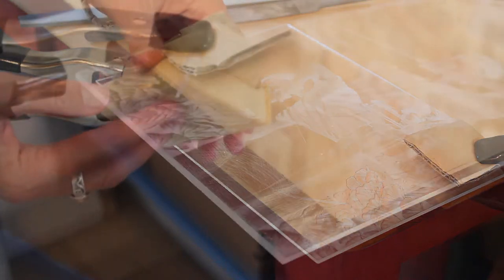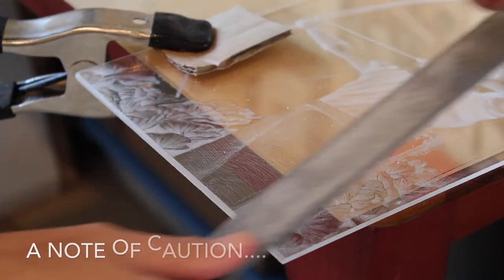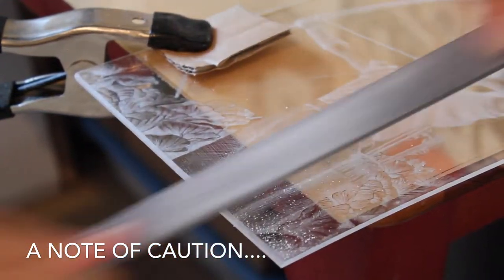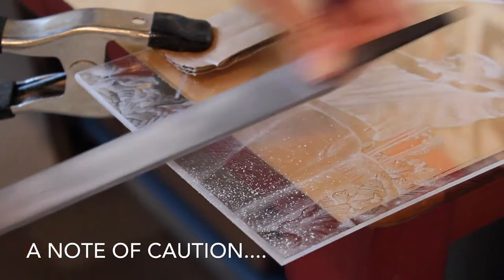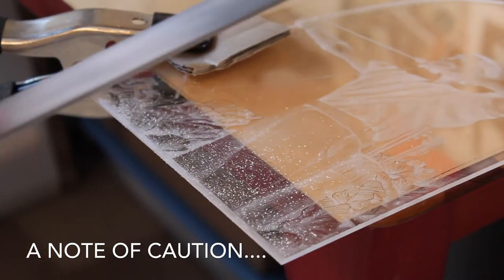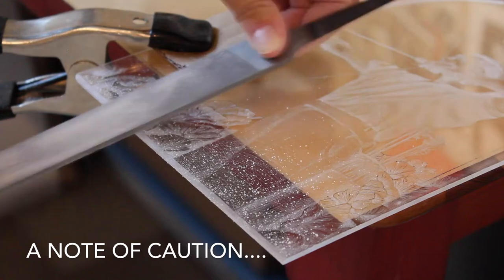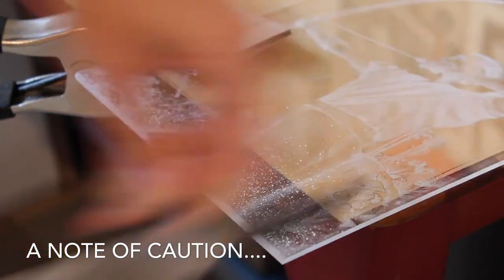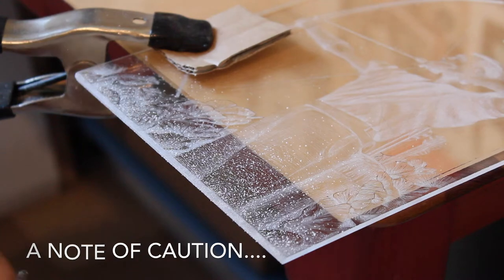This part is important. Friction against plexiglass causes heat and heat releases vapors. One of the gases is called methyl methacrylate monomer or MMA. Exposure to MMA can cause eye irritation, respiratory irritation, nausea and headache so please ventilate and wear a respirator.